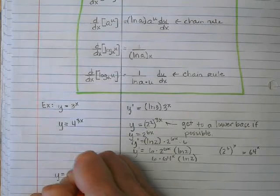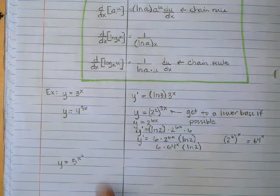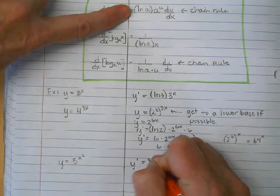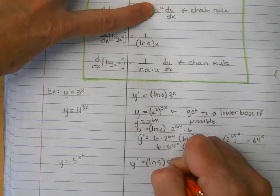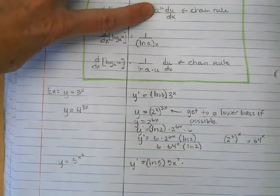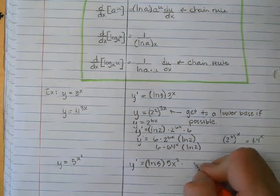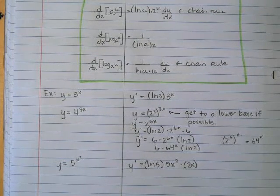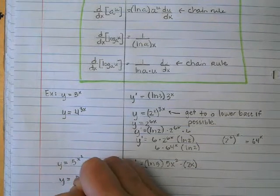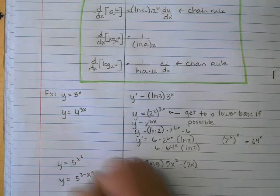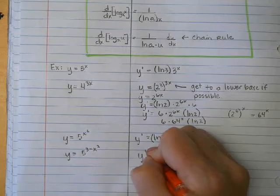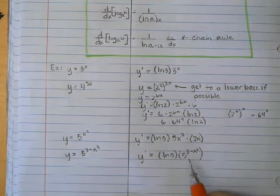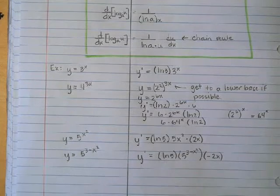Let's say we have y equals 5 to the x squared. We can see there's a little baby function up there, so y prime is the natural log of 5 times 5 to the x squared, times the derivative of x squared, which is 2x. Similarly, for something like y equals 5 to the (3 minus x squared), y prime is natural log of 5 times 5 to the (3 minus x squared), times the derivative of that, which is negative 2x.